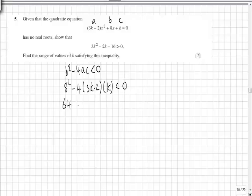Expanding we get 64 minus 4 times 3k times k is 12k squared, and minus 4 times k times minus 2 is plus 8k, all less than 0. So rearranging, making 12k squared positive, we get 12k squared minus 8k minus 64 is greater than 0.